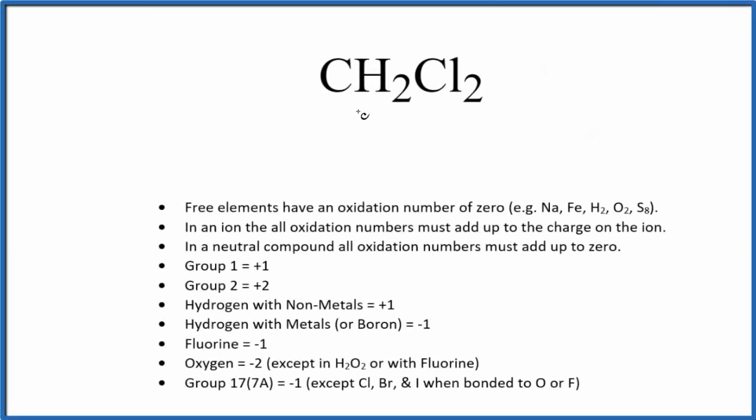Let's find the oxidation number for each element here in CH2Cl2. This is dichloromethane. So the first thing we note, there's no negative or positive sign after CH2Cl2. That's because it's a neutral compound. All the oxidation numbers in a neutral compound are going to add up to zero. So that's important to know.